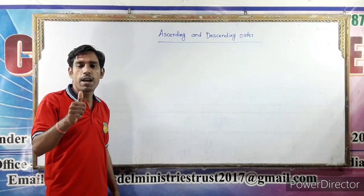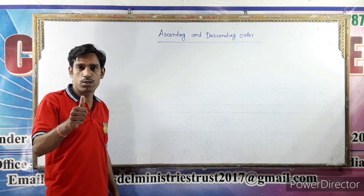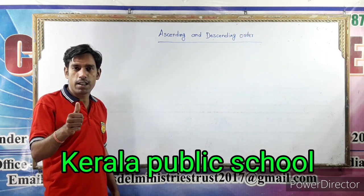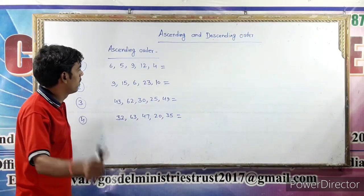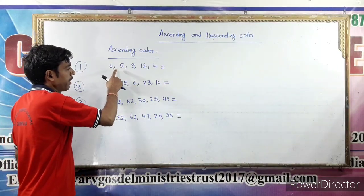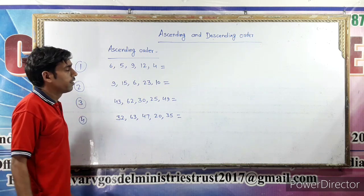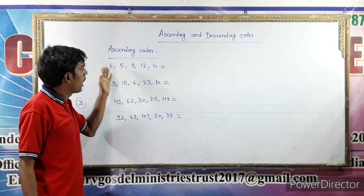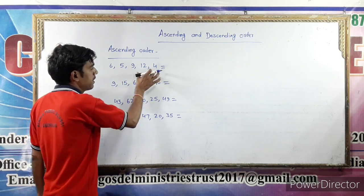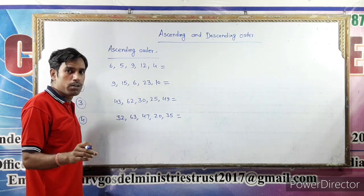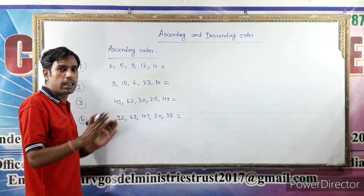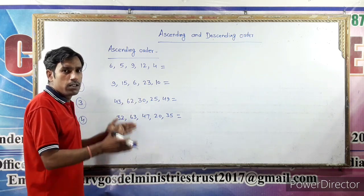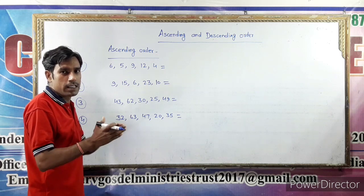Hi students! I am Shantosh Kumar from Kerala Public School. Today we are going to learn ascending and descending order. Can you tell me ascending order? Ascending order means the smallest number to the greatest number. We start from the smallest number and end at the greatest number.